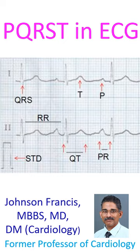QT interval is measured from the onset of QRS to the end of the T wave. It represents the systole of the ventricle and includes the depolarization and repolarization of the ventricle. The isoelectric interval in the ECG is the TP segment.